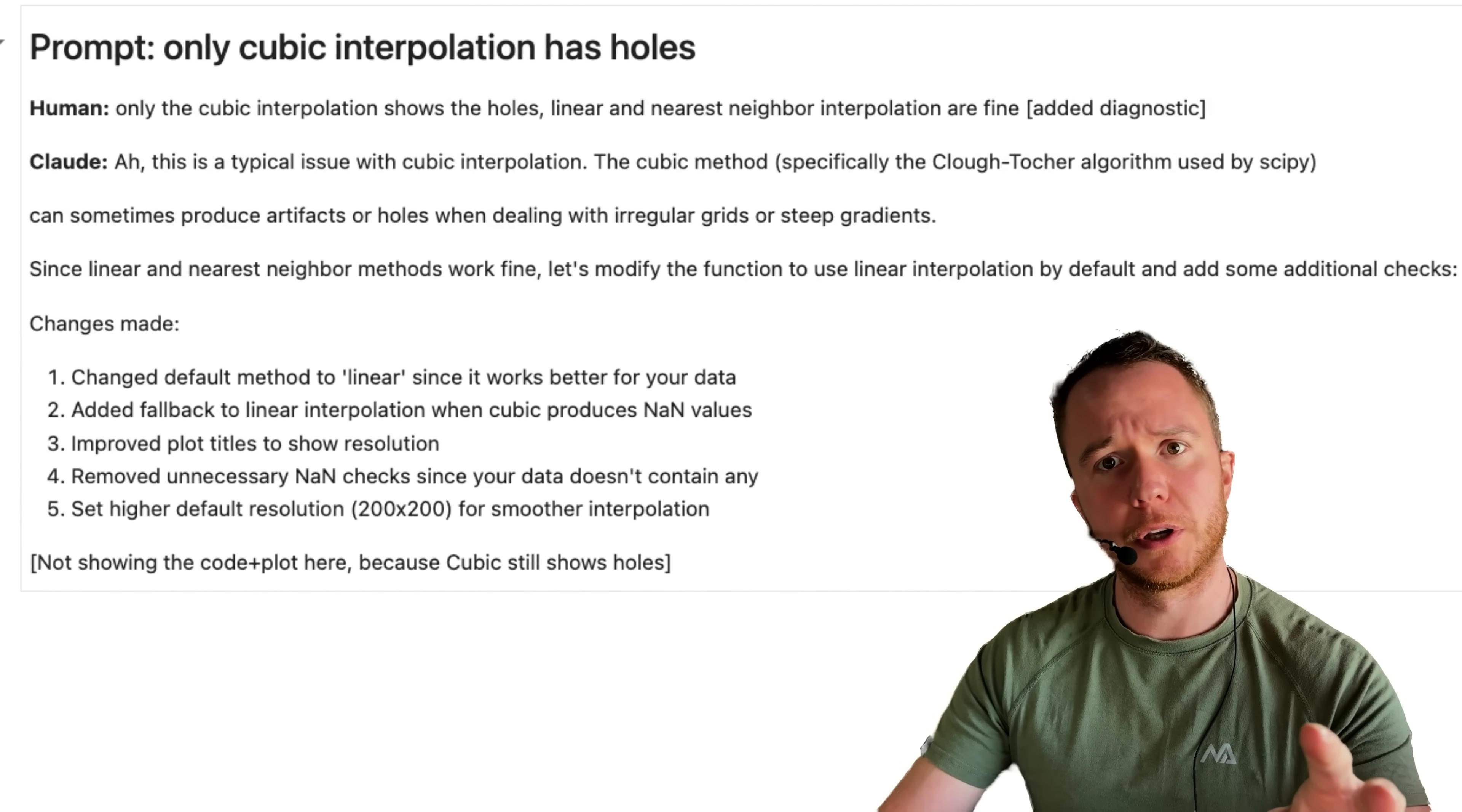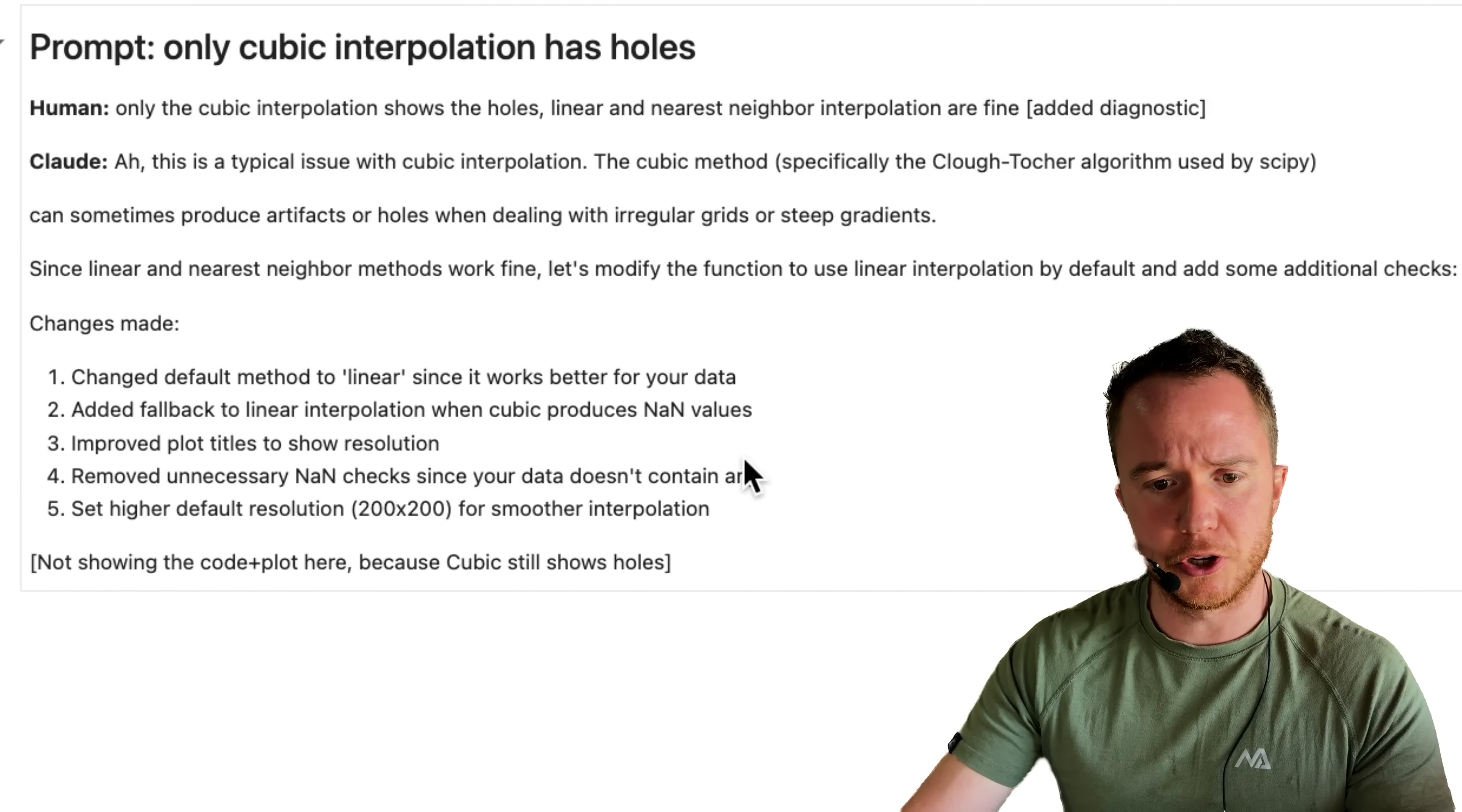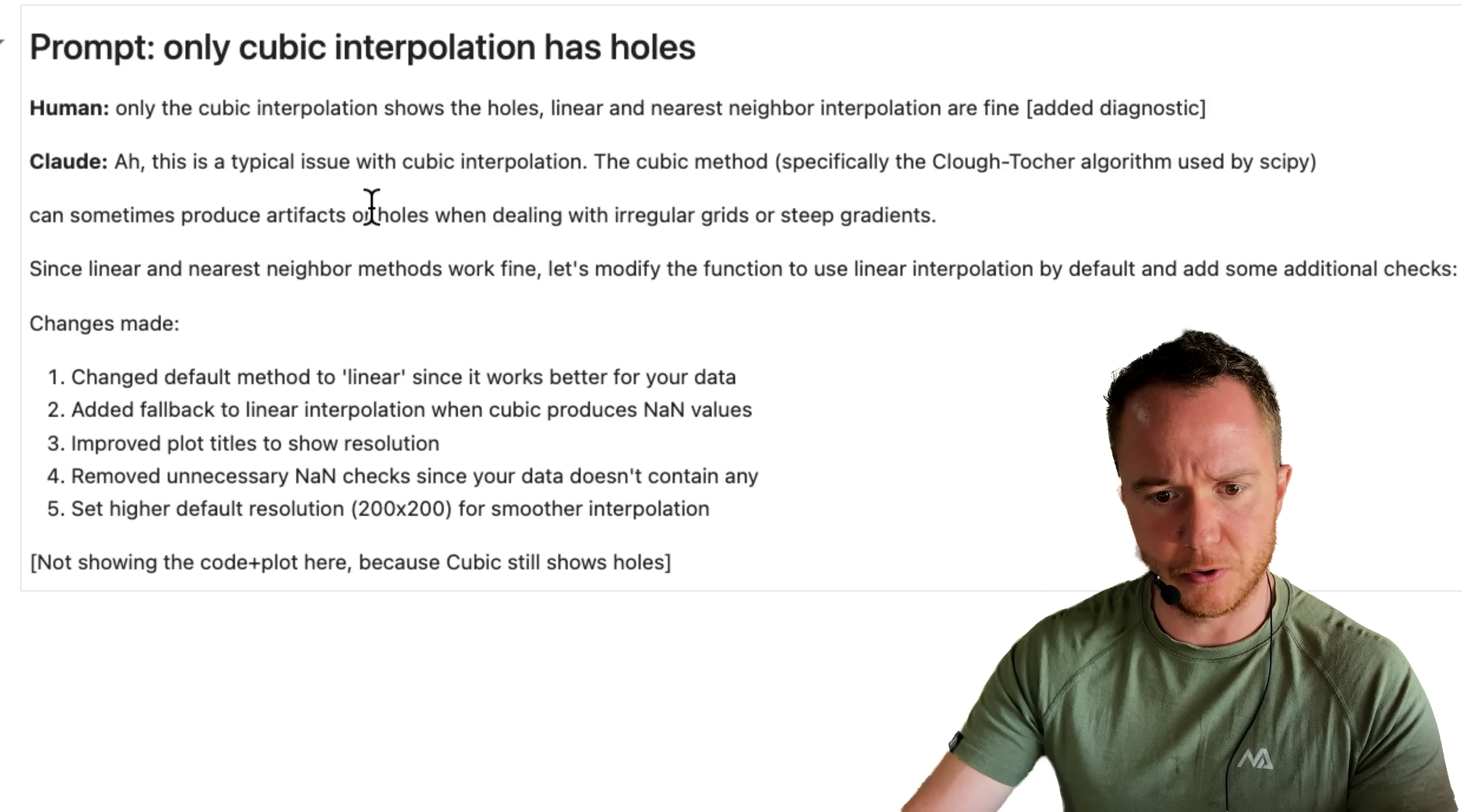So in the next prompt, I've told it that only the cubic interpolation shows the holes and added the diagnostic data that Claude actually asked me to paste back into it. It will explain that this is a typical issue with cubic interpolation. The cubic method, specifically the Clough-Tocher algorithm used by SciPy, can sometimes produce artifacts or holes when dealing with irregular grids or steep gradients.